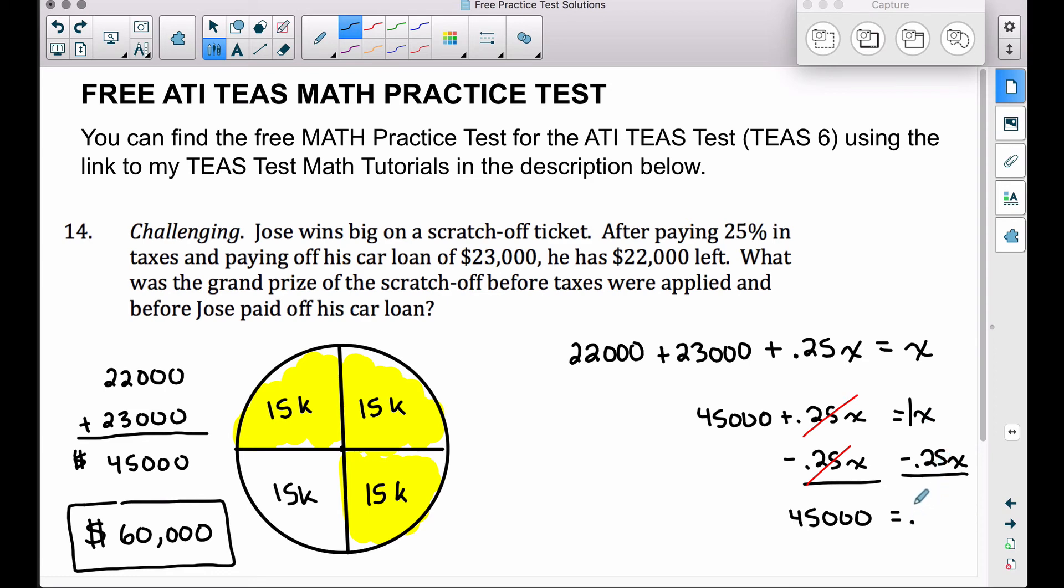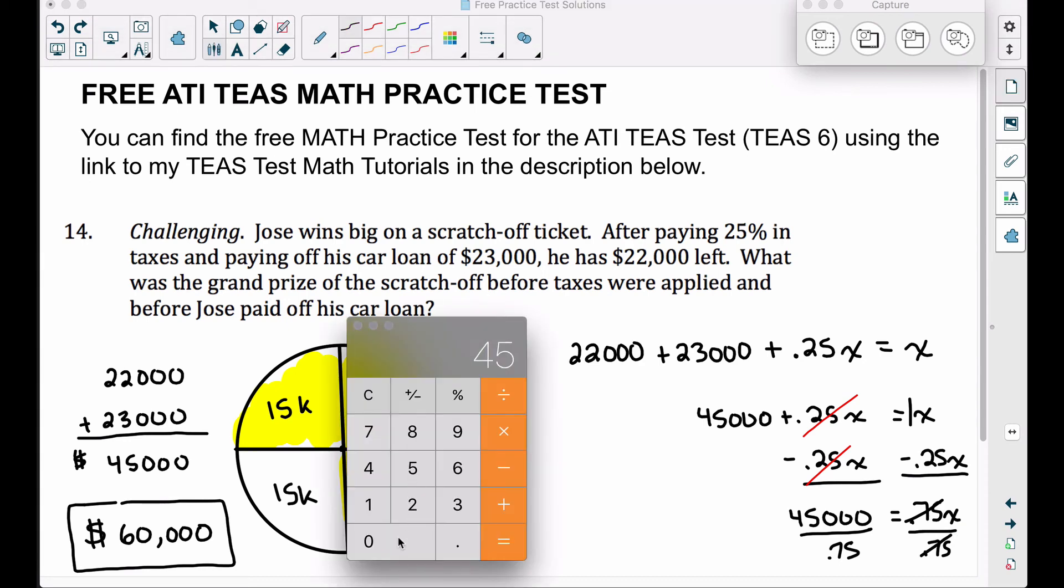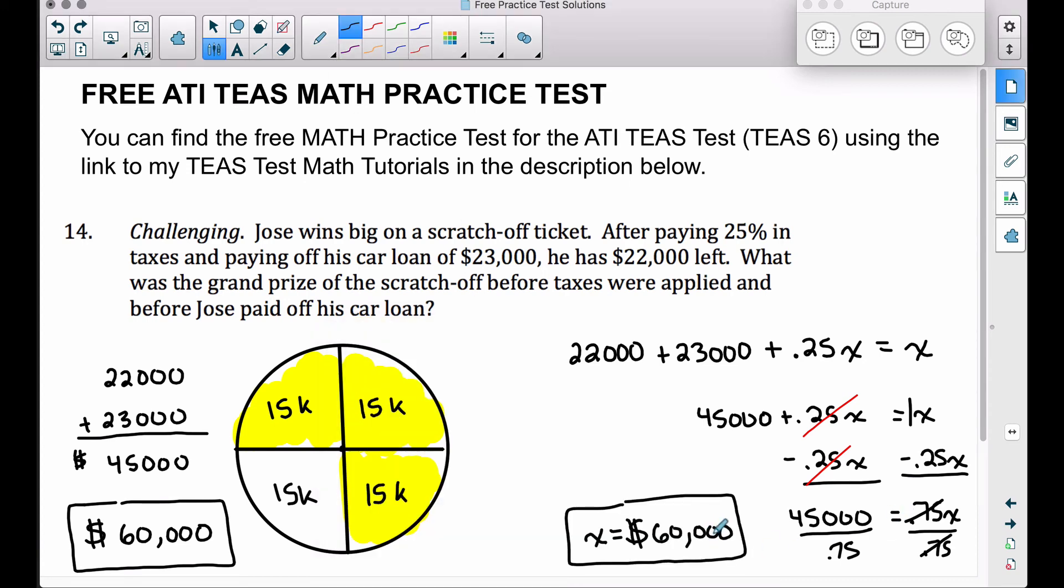And then lastly here, to get X by itself, we can divide by 0.75 on both sides. That's going to cancel out our 0.75 on the right hand side. $45,000 divided by 0.75, check it out, we get X equals $60,000. So yes, we got the same answer, you're taking an equation approach versus more of a visual and more critical thinking involved here, thinking about the 100% and breaking it up into 25% portions.